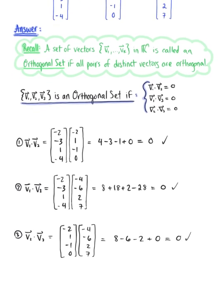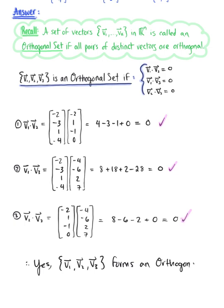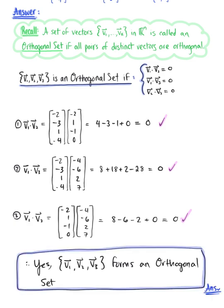So we can make our final conclusion and say that yes, this set of vectors — vector v sub 1, vector v sub 2, vector v sub 3 — forms an orthogonal set, because the dot product of all distinct vectors in this set are equal to 0. This is our final answer.